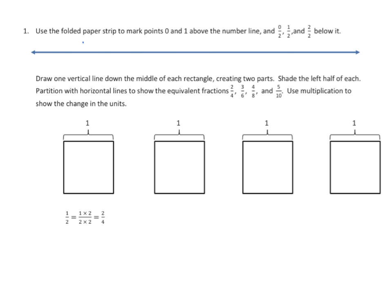I'm going to put in some points on this number line. Above the number line, I'll label this 0 and this will be 1. Zero is the same as 0 halves, and 2 halves is the same as 1. Below it, we're going to mark a midpoint. With a strip, you should be able to get very accurate, but I need to eyeball it here. So I'm just going to label this 1 half. That's the first part of the task.